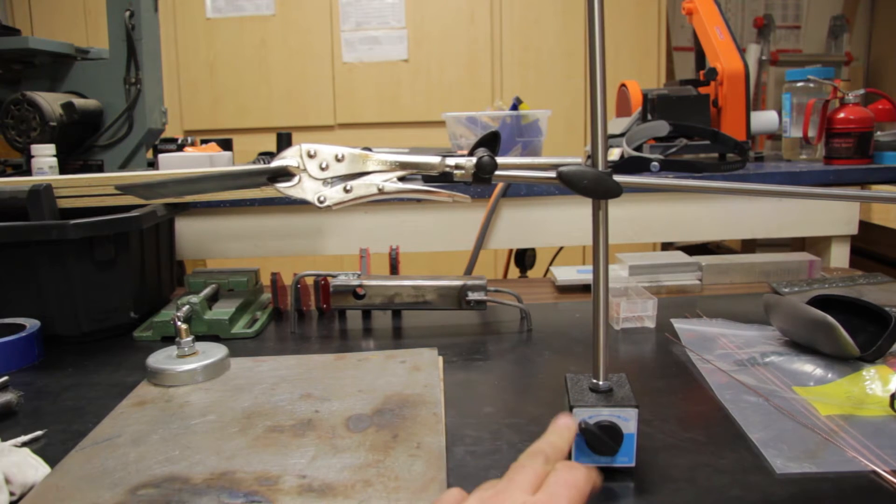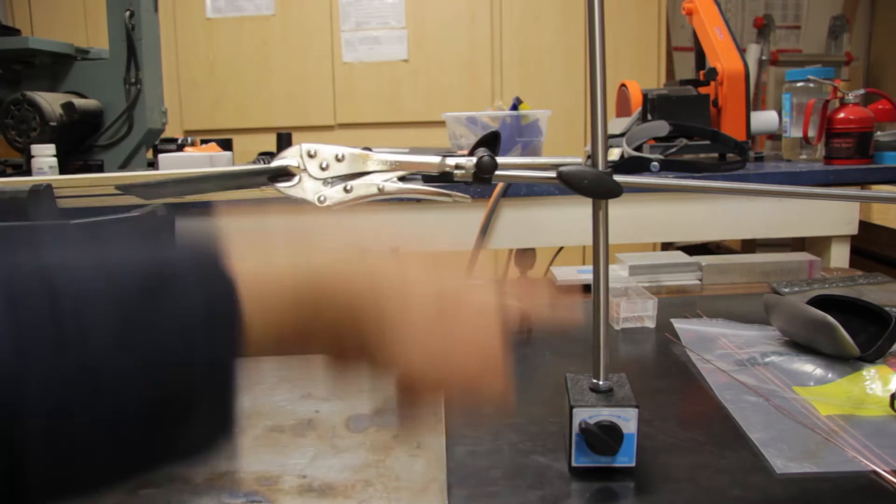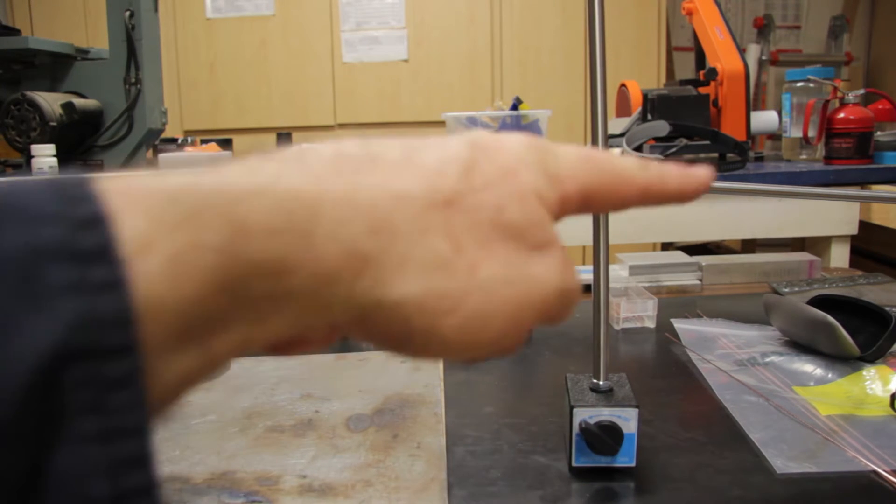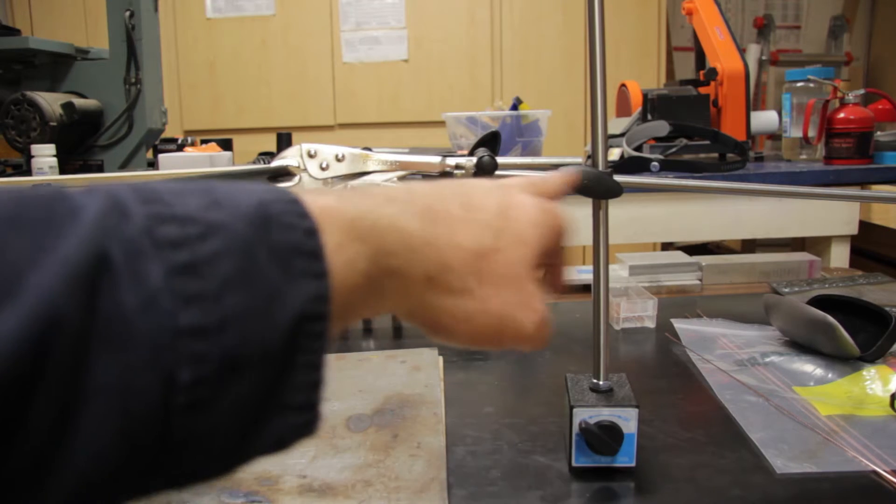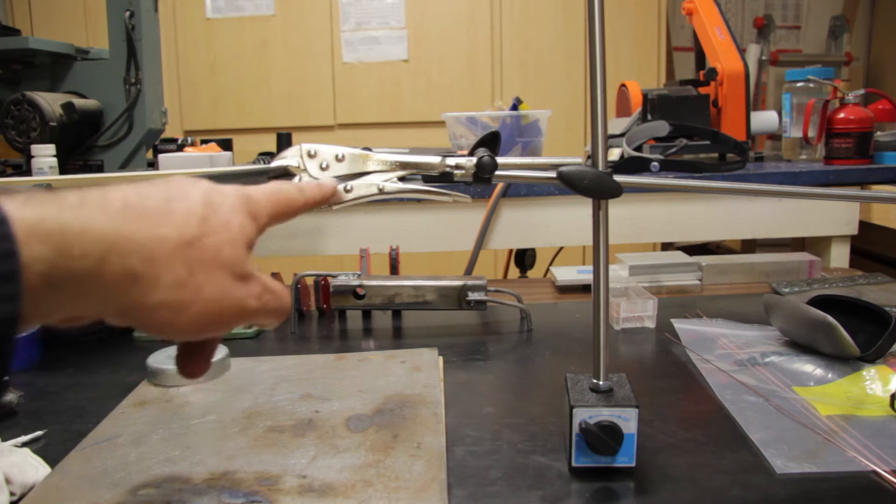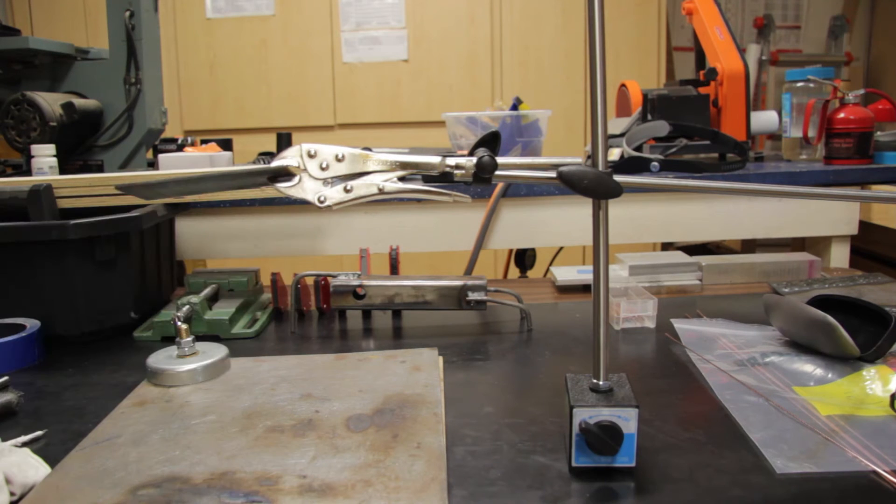What I have here is a dial indicator magnetic base, 36 inches of drill rod that's been threaded, and I have a 24 inch piece of drill rod that I'm using as a cross piece, piece of carbon steel welded to a small set of vice grips.